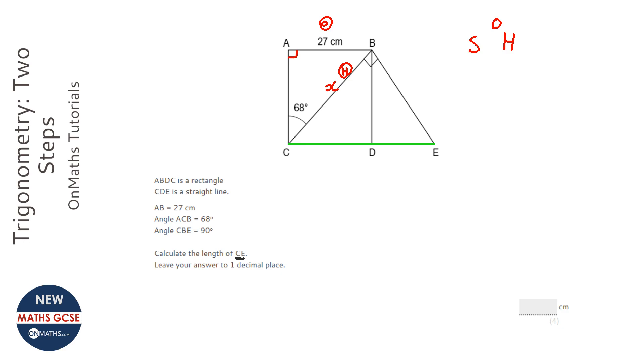And I'm going to times both sides by x and divide both sides by sine 68. That gives me x equals 27 over sine 68.